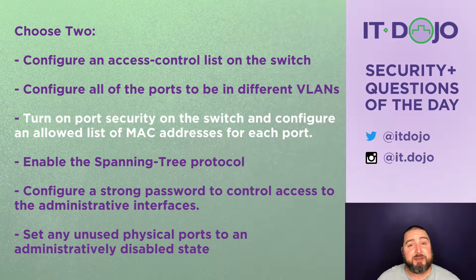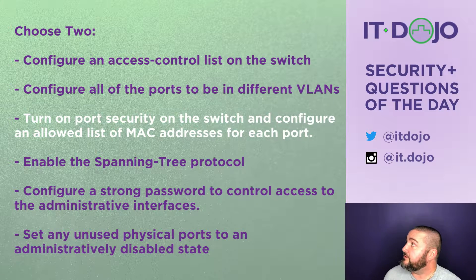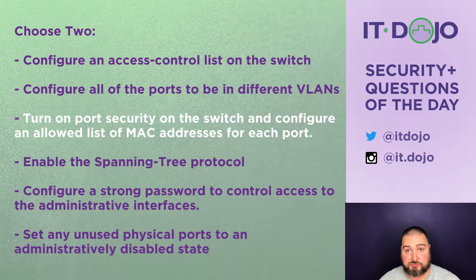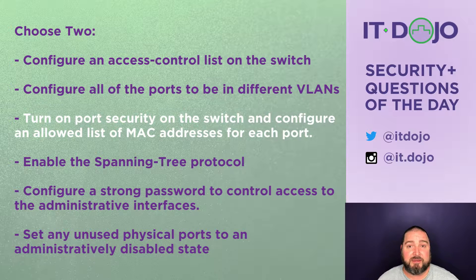The next option says turn on the spanning tree protocol. Absolutely turn on spanning tree if you want to avoid loops in your switching topology, but if you're trying to physically secure the switch, spanning tree protocol doesn't help you there. The next option says configure strong passwords to control access to the administrative interfaces. That's generally good advice, but it doesn't pertain to the question — having strong passwords on the switch's console port or web management interface isn't going to control users physically plugging into the switch.